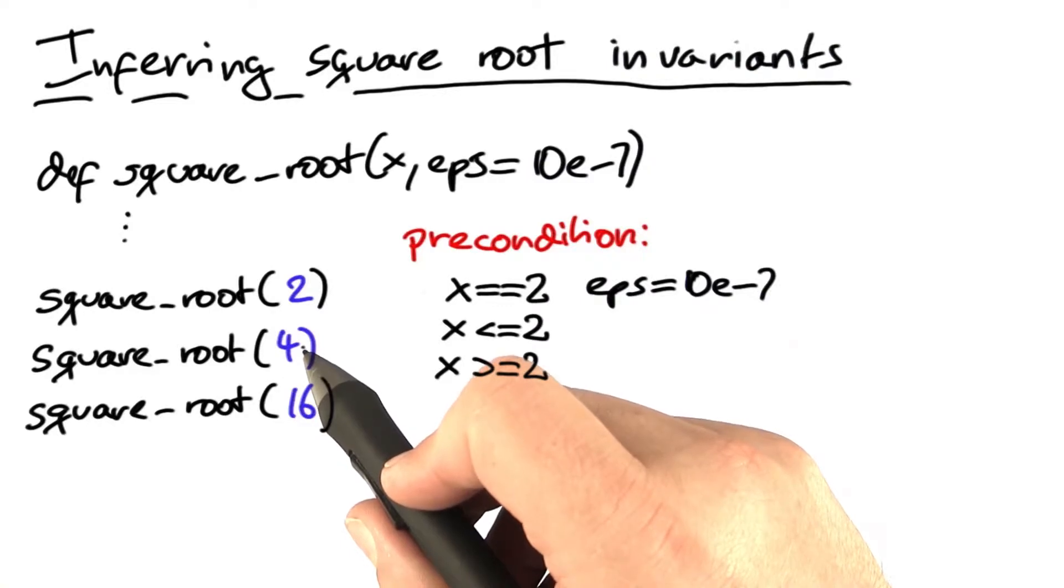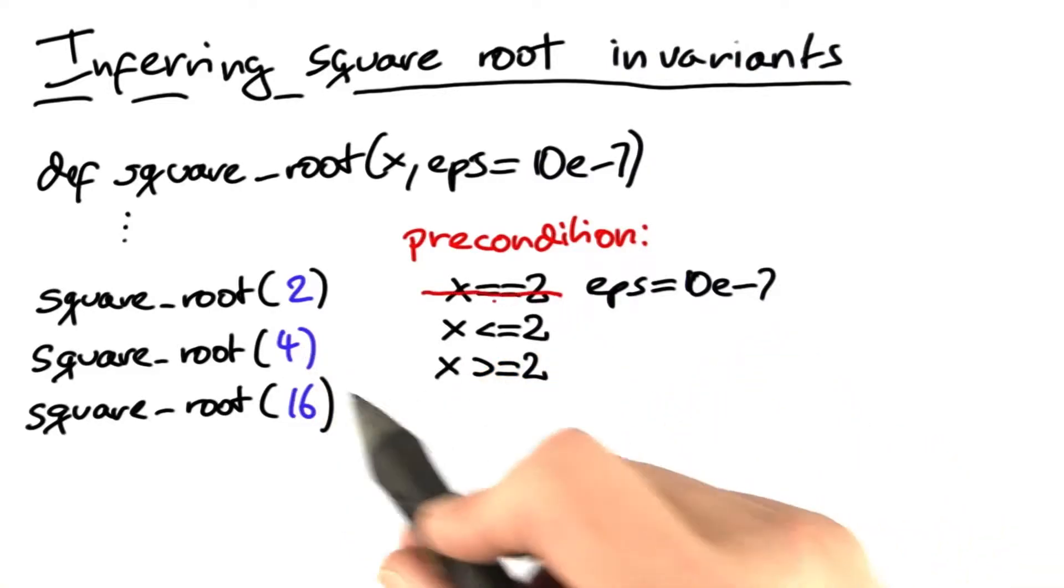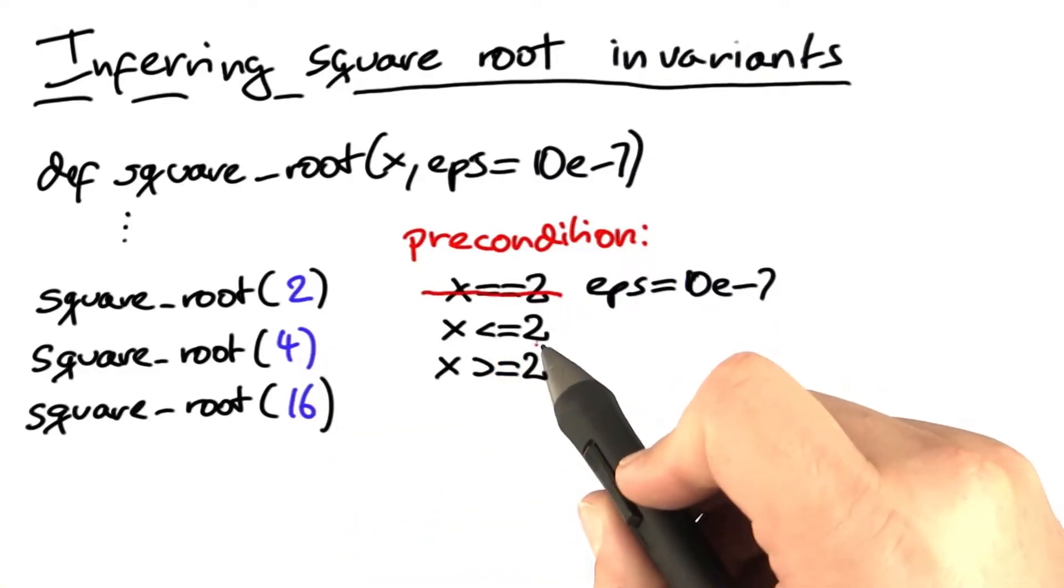we invoke square root with a number of 4. And now, the invariant of x always being 2 is eliminated.